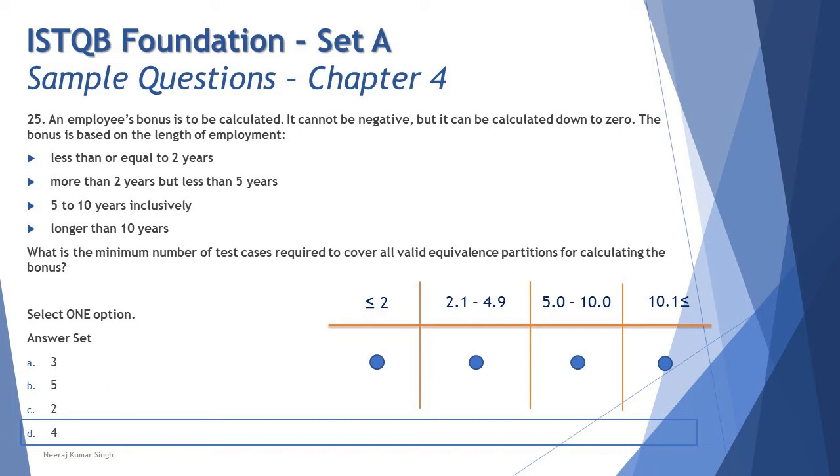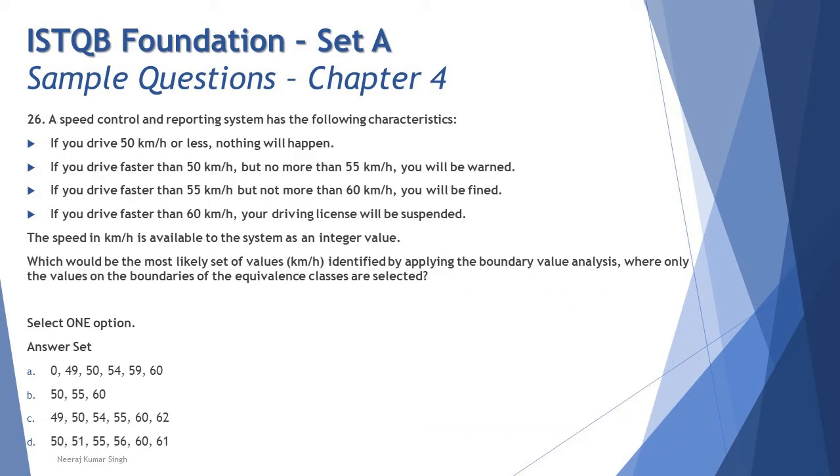Let's look at the next one here. Question number 26, which is again on the similar thing, but we are talking about multiple things put together. So question number 26 says a speed control and reporting system has the following characteristics: If you drive 50 km/h or less, nothing will happen. If you drive faster than 50 km/h but no more than 55, you will be warned. If you drive faster than 55 km/h but not more than 60 km/h, you will be fined. And if you drive faster than 60 km/h, your driving license will be suspended.